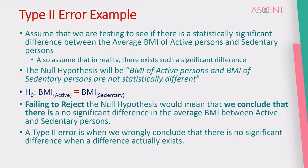Mathematically, we will denote: BMI of active persons is equal to BMI of sedentary persons. This is a mathematical null hypothesis that we have to write. If we fail to reject the null hypothesis, we are making a Type 2 error.